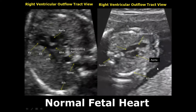In the right ventricular outflow tract view, we can see the right ventricle and the main pulmonary artery, along with its branches — the right and left pulmonary arteries. Part of the aorta is also seen.